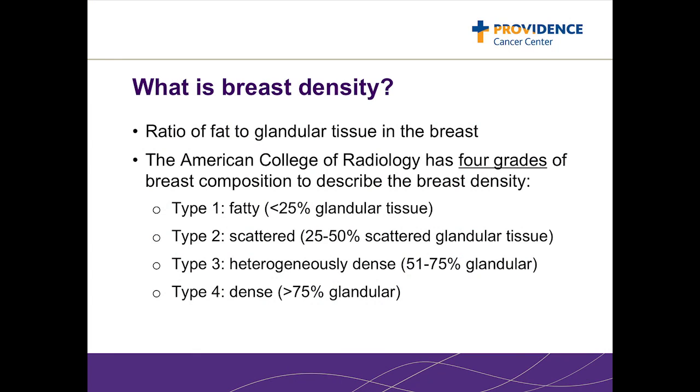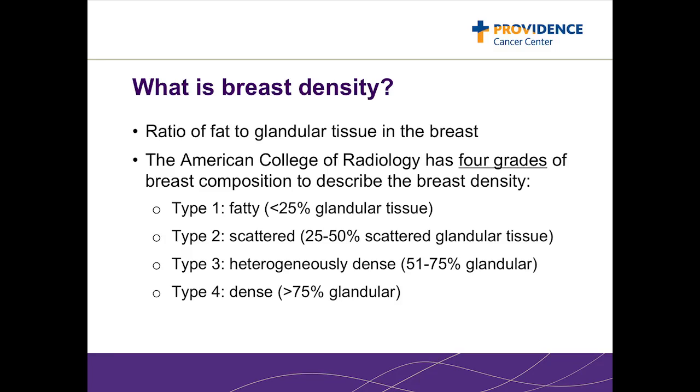There are four categories of breast tissue, depending on the amount of fibroglandular tissue you have. Fat looks black on a mammogram; fibroglandular tissue looks white on a mammogram. The problem is that cancers also look white on a mammogram. Therefore, if there is a lot of fibroglandular tissue — that is, if the tissue is dense — it can obscure a cancer.